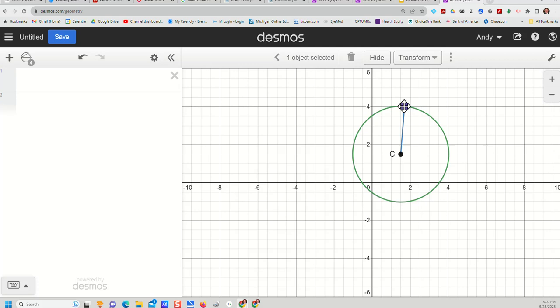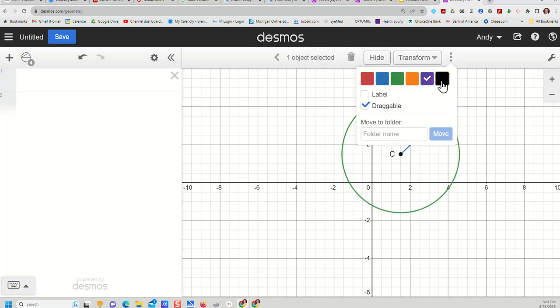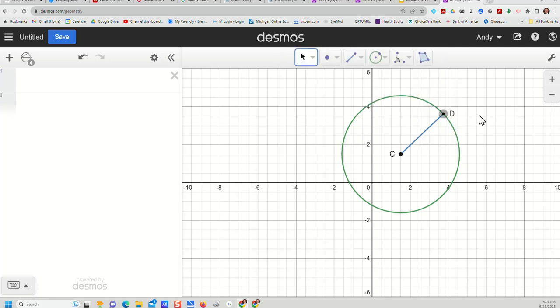Well students can't move the center but they can adjust the circle by moving this point on the outside. So I'm going to change this outside point to have also the color black and I'm going to have it have a label, we'll just leave it at D so this is now CD. So students can manipulate this circle in this way.